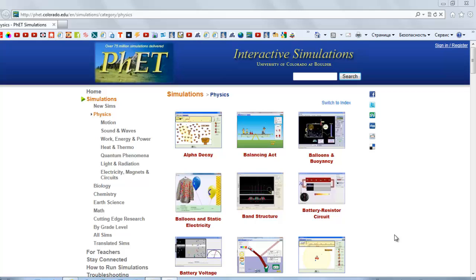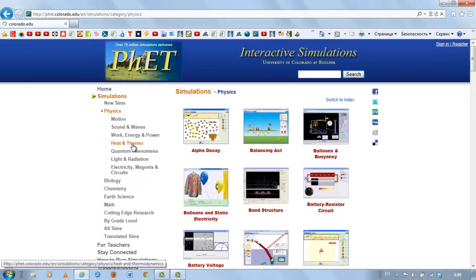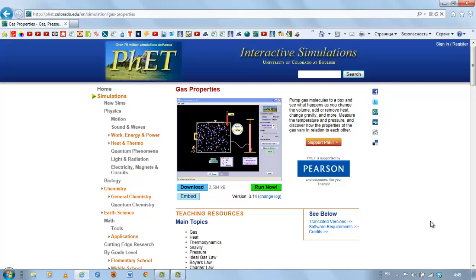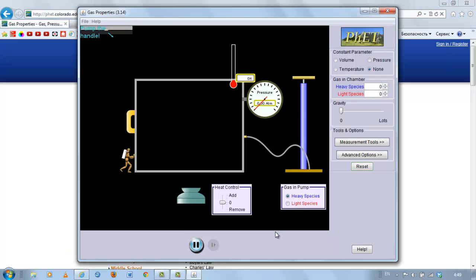When you open PhET simulations, go to physics, then select heat and thermal, and then open gas properties. For some reason when I click on run now it doesn't work on my computer, but when I go download and then open, the simulation opens.